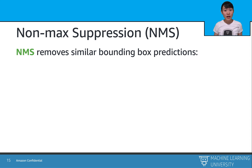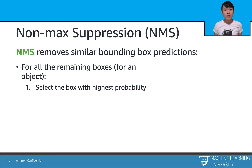Non-max suppression removes similar bounding box predictions for each object. For all the remaining boxes for each object, we first select the box with the highest probability confidence for that object. Then we calculate the IOU of the other boxes versus this selected box, and remove the boxes that have a really high IOU with the selected one.